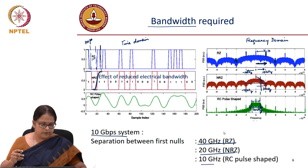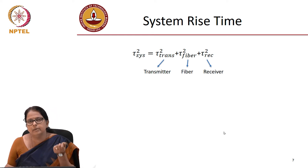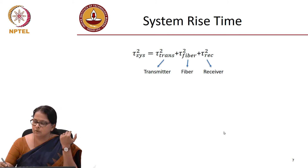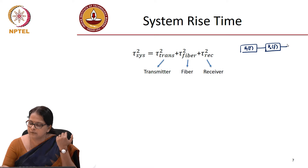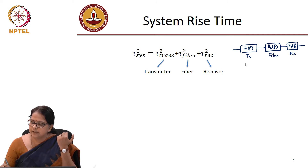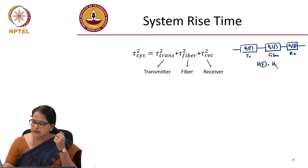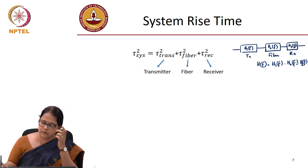So how do we calculate that? The total system rise time is given as: system rise time squared equals the sum of squares of transmitter, fiber, and receiver rise times. It is like saying I have three cascaded filters — how do I find the total bandwidth of the system? I can think of this as H1(f) for the transmitter, H2(f) for the fiber, and H3(f) for the receiver. The cascaded response is H1(f) × H2(f) × H3(f), and you can prove that τ_system² = sum of squares of the individual rise times.